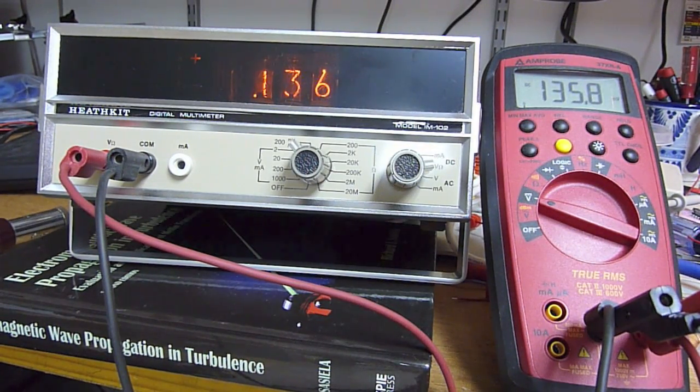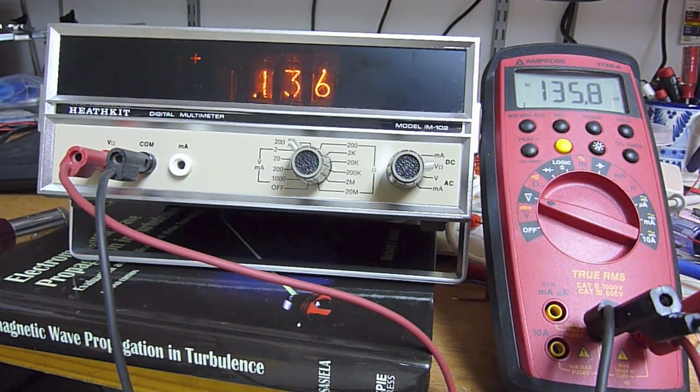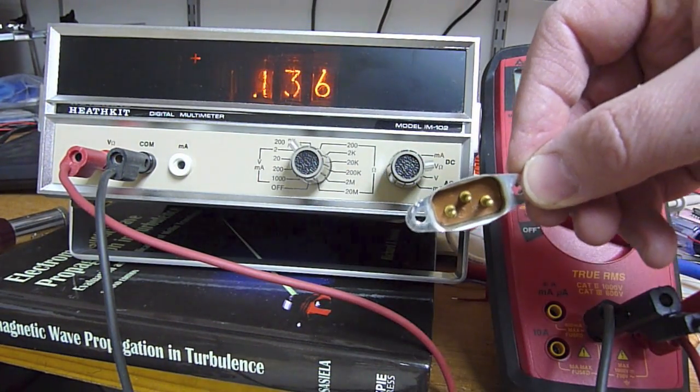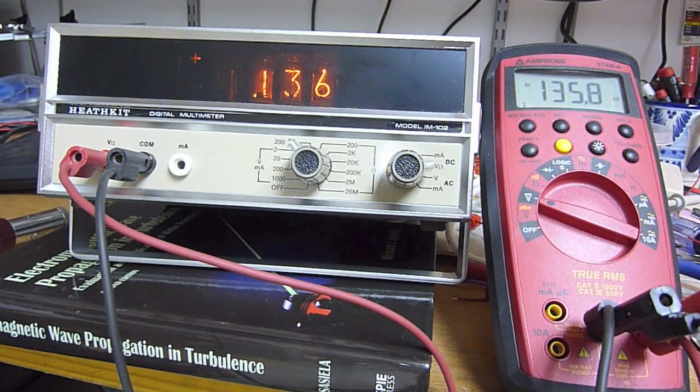I was picking up some parts the other day and I found this old Heathkit multimeter in the used equipment section, so I couldn't let it go because it had nixie tubes. Anyway, after replacing the old-school power connector, I thought I'd give it a try and see how accurate it is.